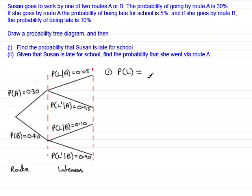Probability of being late. How could she be late for school? Well, she could have taken route A and been late, or she could have taken route B and been late.